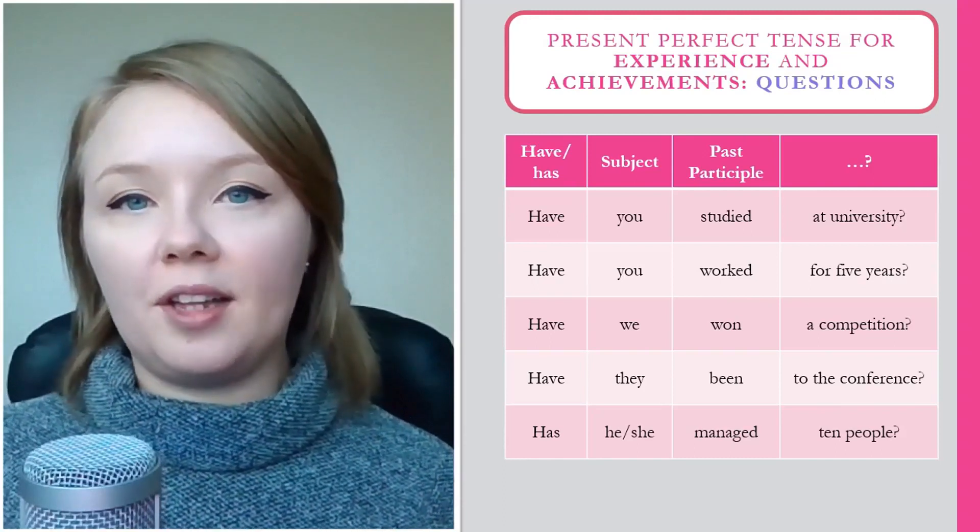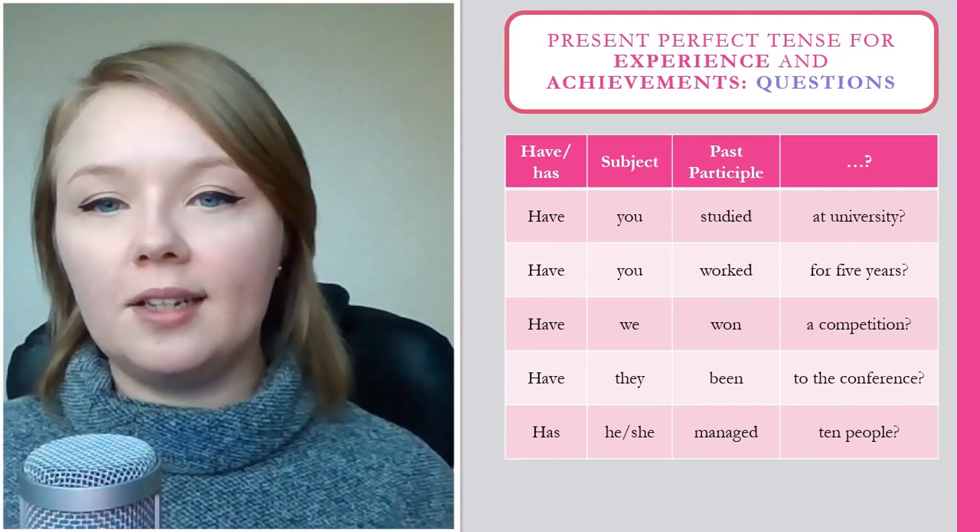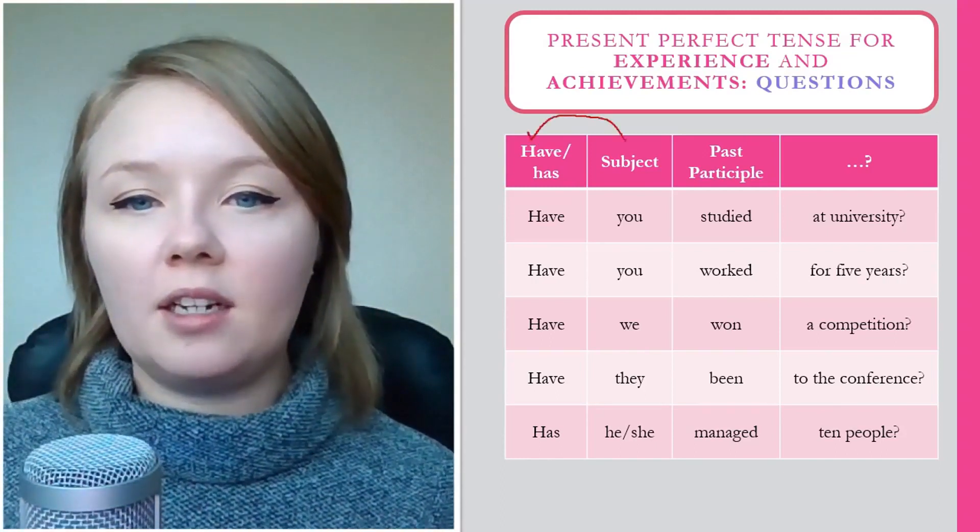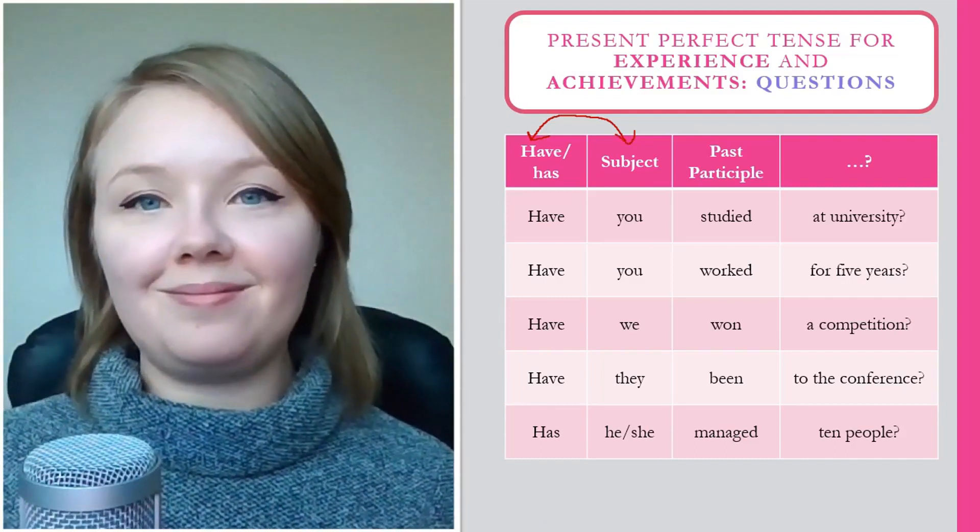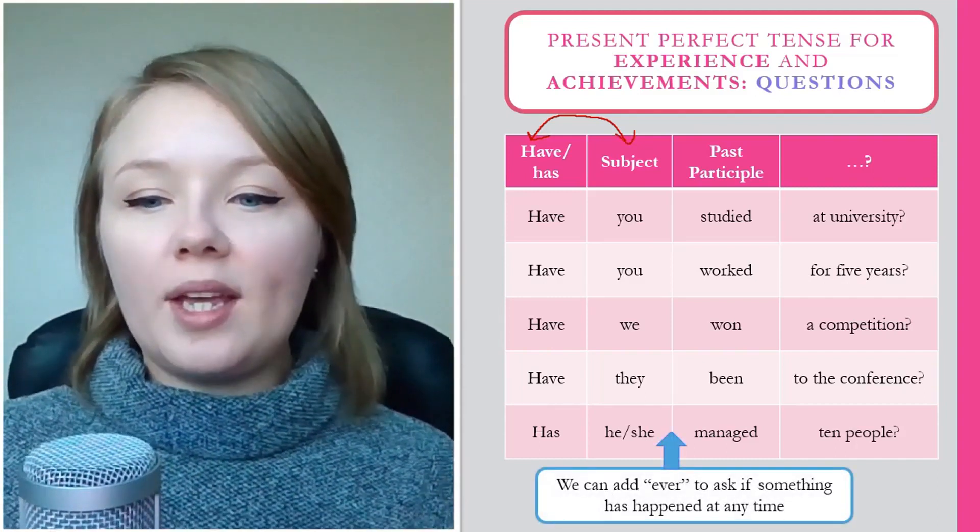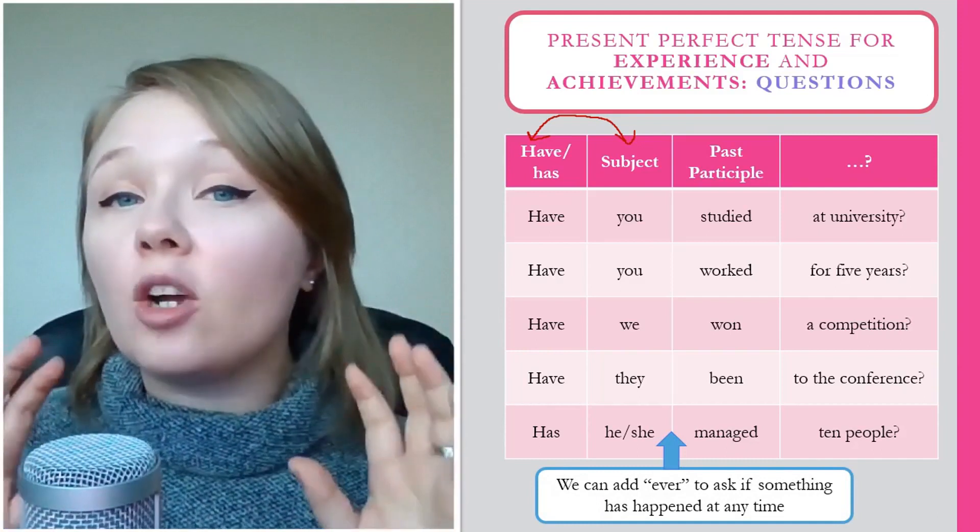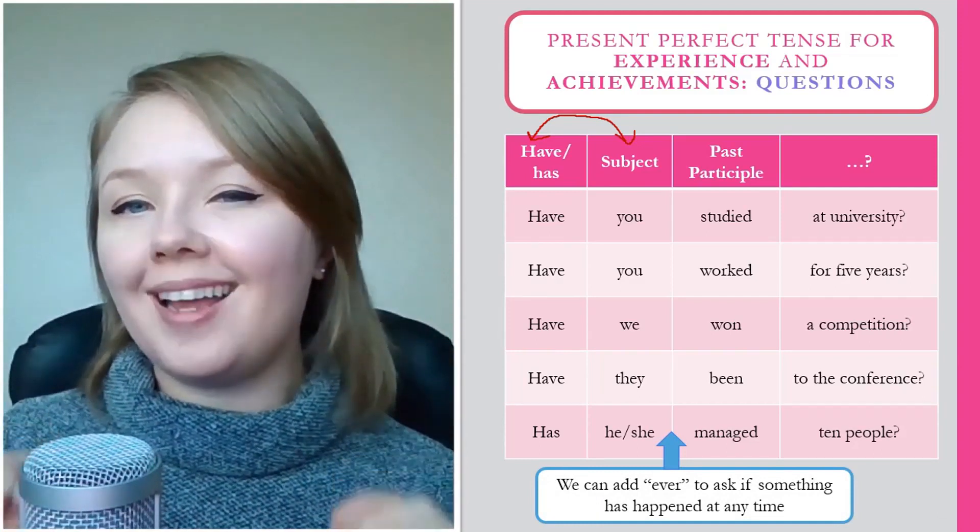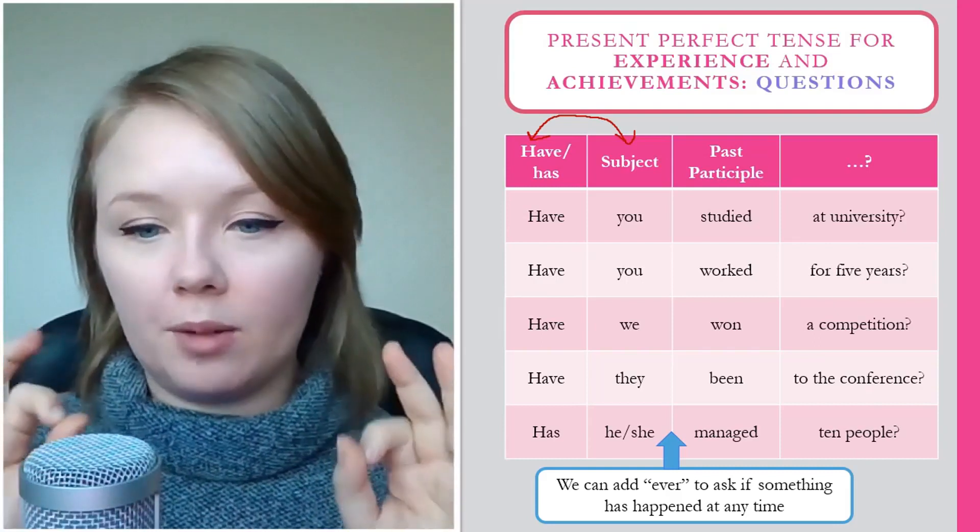So just like we see in other verb tense forms, all we have to do is take our subject and our first verb and switch them around. We can also add the word ever in a question. We can only add ever in a question, not in our answers. Very important.